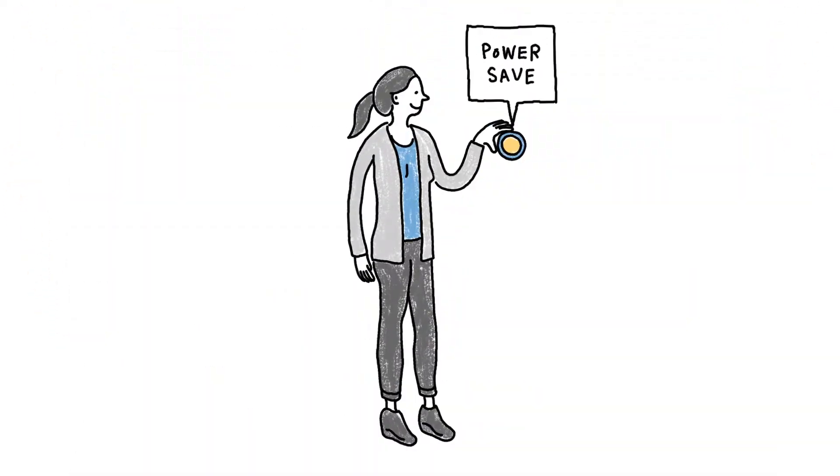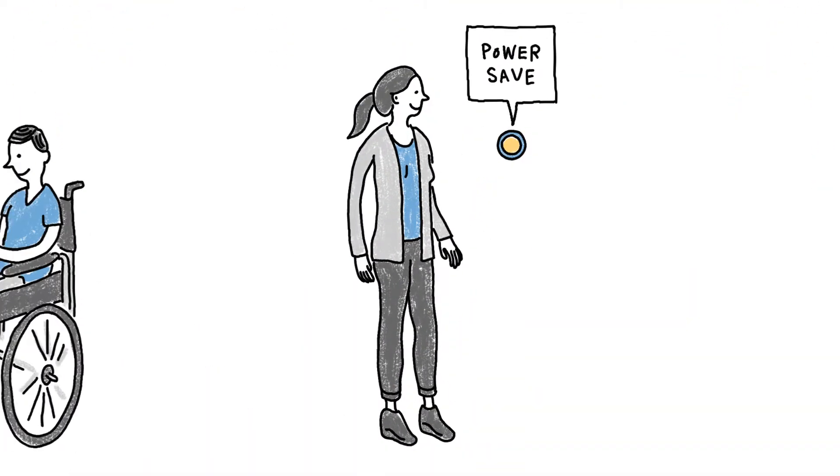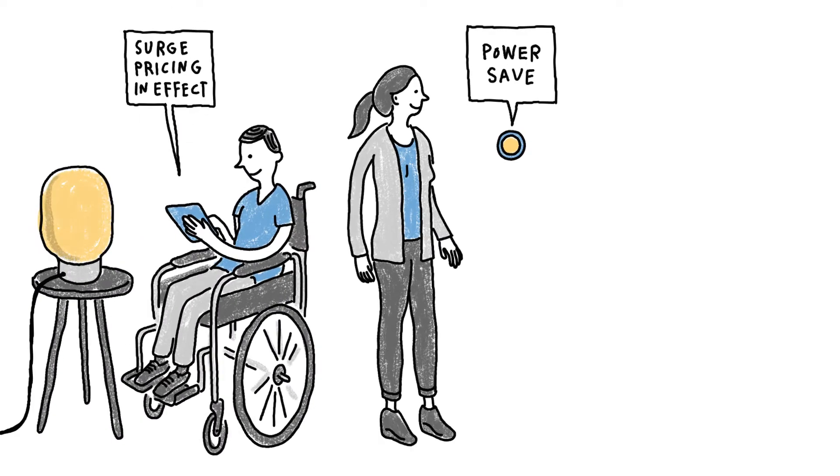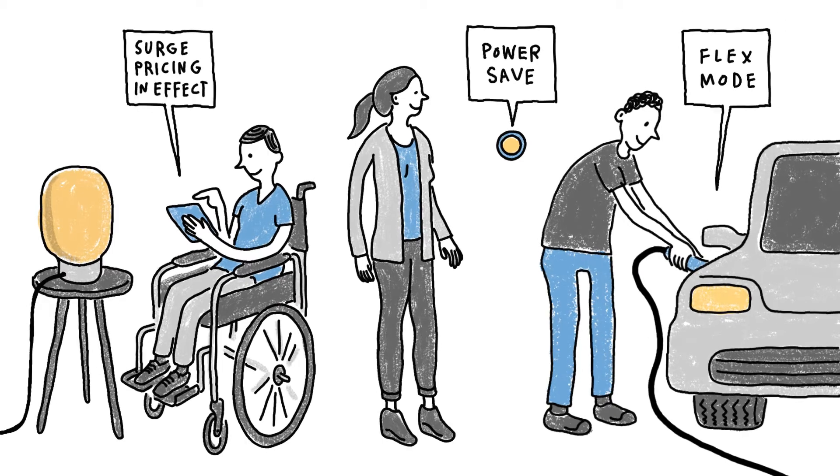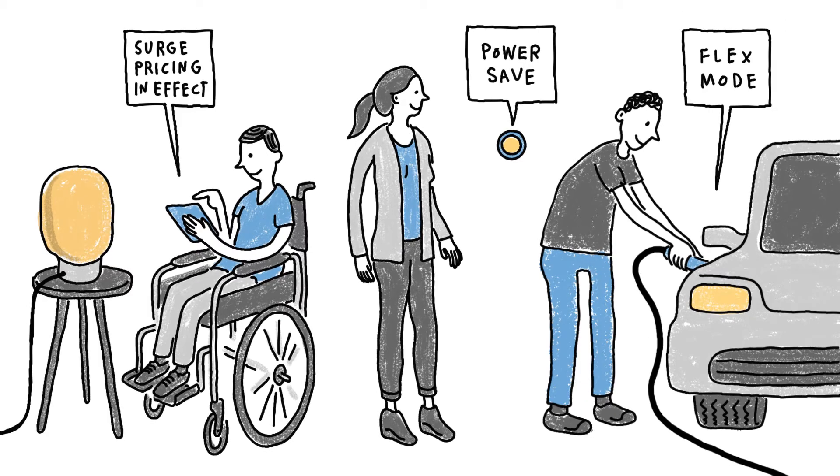By empowering everyone to be a part of the smart grid, utility companies are providing better service and giving more choice to their customers who can in turn respond to the needs of the grid, thus creating a virtuous feedback loop.